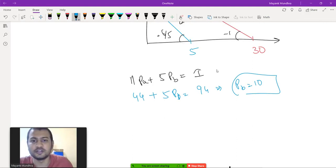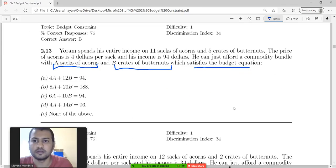Once you get PB, the budget equation becomes 4 times... PA has been given as 4, PB is 10. So the budget line becomes 4 times A plus 10 times B equals income. 4A plus 10B.